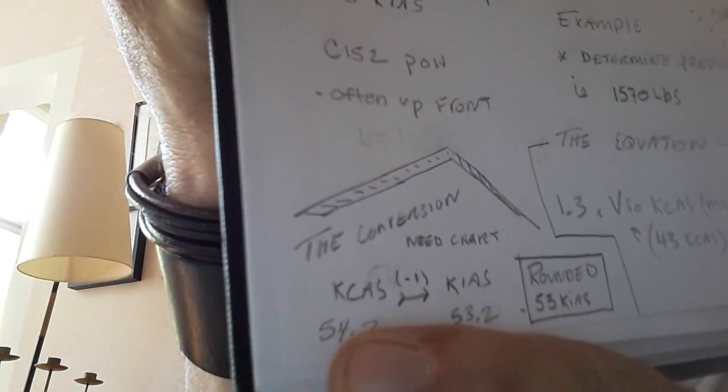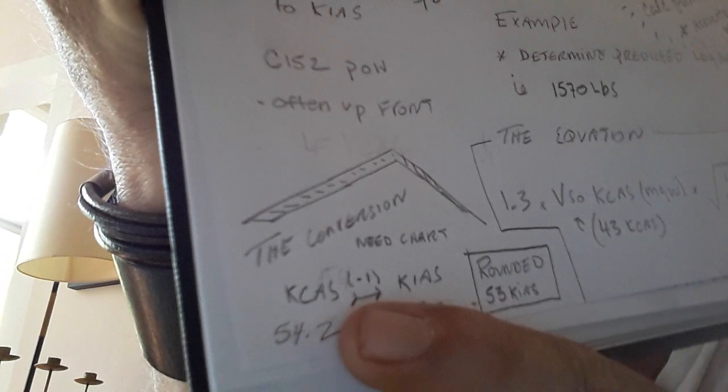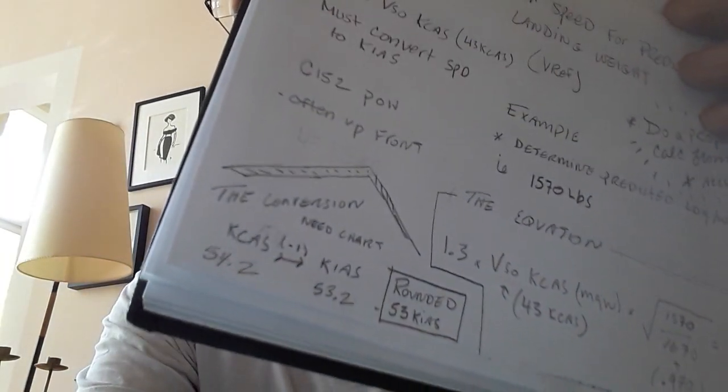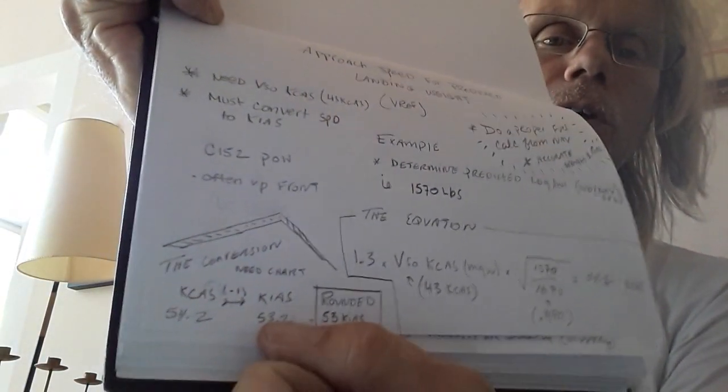Looking at the chart, there's a one-knot difference between calibrated and indicated airspeed for the Cessna 152 with 30 degrees of flaps. From the POH on my laptop, at 30 degrees of flaps, 51 CAS gives you 50 KIAS — so it's one knot less. Therefore 54.2 minus one is 53.2 knots indicated airspeed. That's the airspeed you quote and the airspeed you fly on short final, just before the flare and landing.